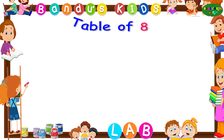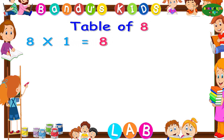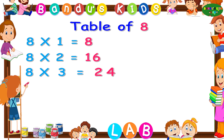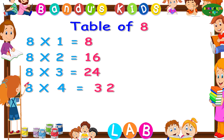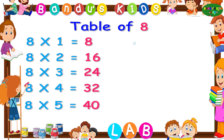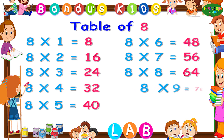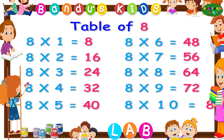Now let's revise the table of eight one more time. Eight ones are eight. Eight twos are 16. Eight threes are 24. Eight fours are 32. Eight fives are 40. Eight sixes are 48. Eight sevens are 56. Eight eights are 64. Eight nines are 72. Eight tens are 80.